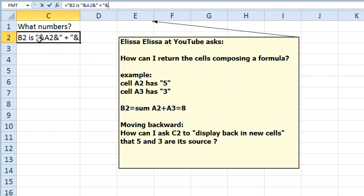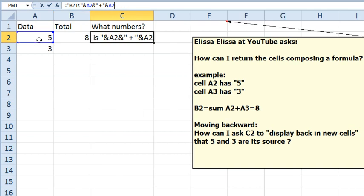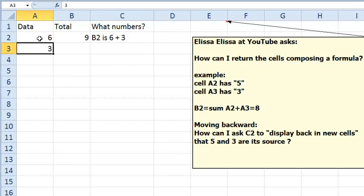So, B2 is 5 plus 3, and then if we change these numbers, 6 and 2, it will document what is going on.